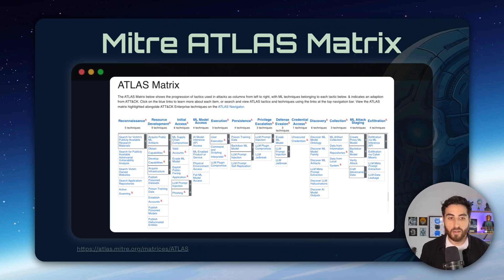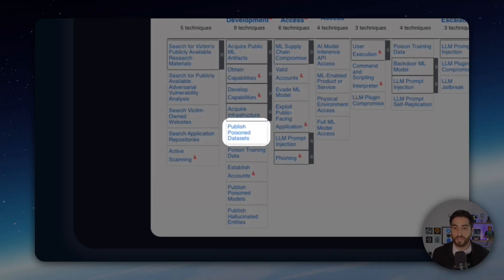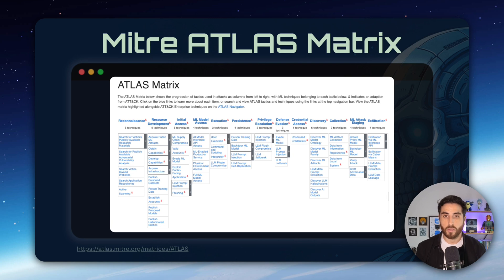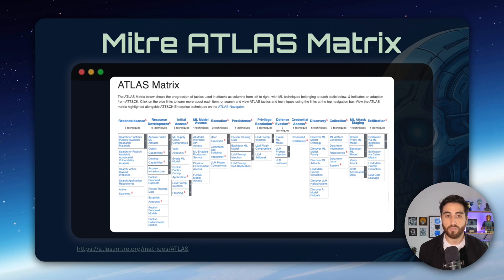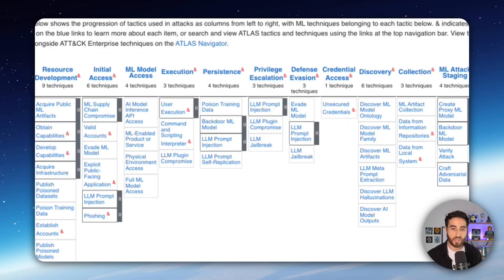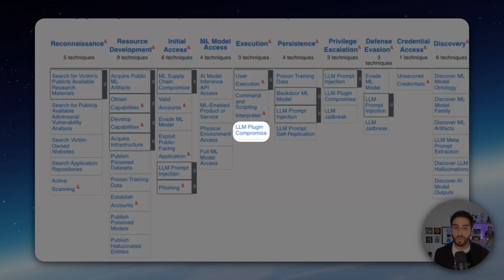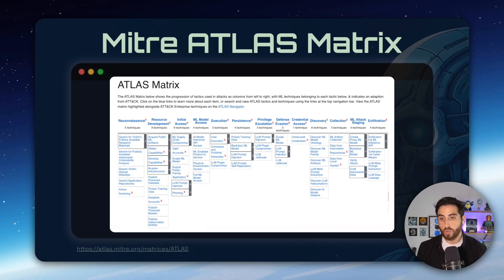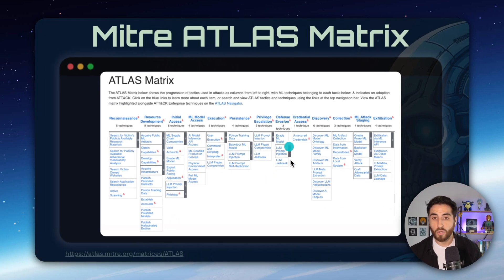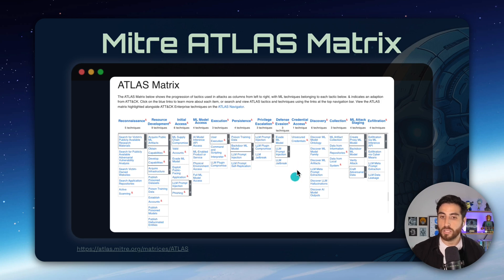To name a few techniques: we have published poisoned datasets, where an attacker crafts a dataset that is directly poisoned and you reuse it to fine-tune your own models, potentially ending up with a compromised model. There is also prompt injection, which appears here under persistence, as well as LLM plugin compromise — relevant if you are using MCP or a tool to connect to your LLM or agent. We also have privilege escalation via LLM jailbreak, defense evasion by evading machine learning models, and more.